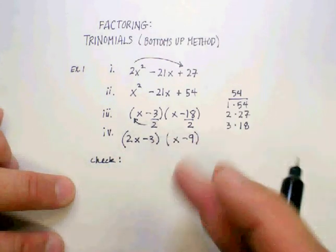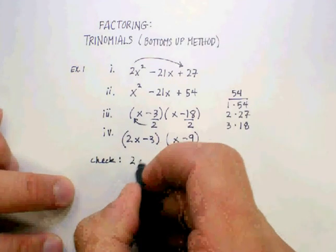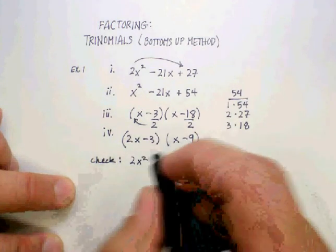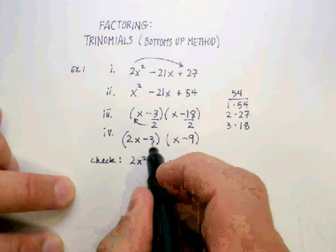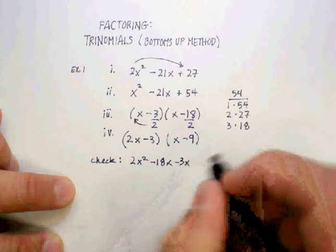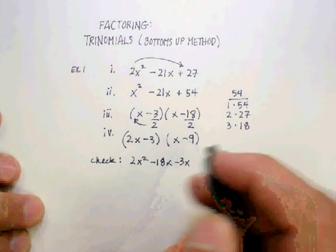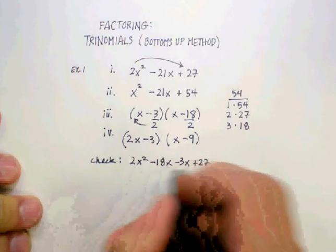How do you check that? Well, since you've got two binomials, let's just go ahead and do a FOIL. 2x times x is 2x², 2x times negative 9 is negative 18x, negative 3 times x is negative 3x, and then negative 3 times negative 9 is a positive 27.